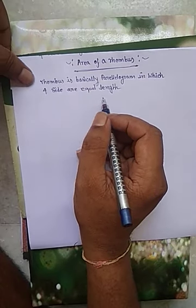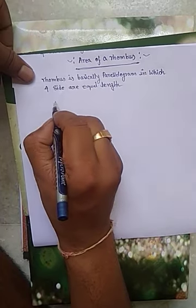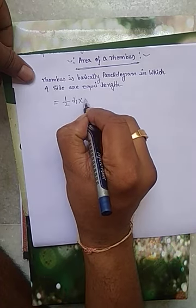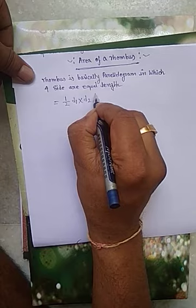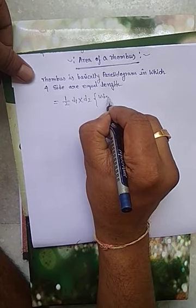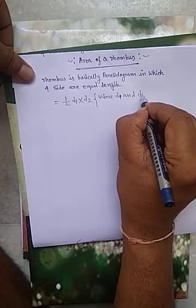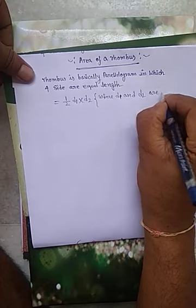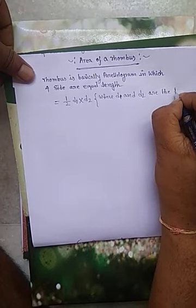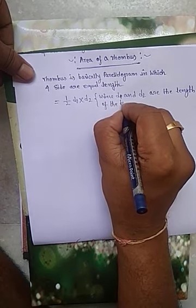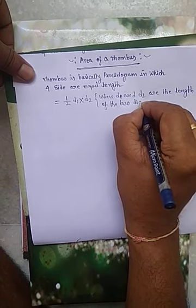So, basically area of the rhombus is equal to half D1 into D2, where D1 and D2 are the length of the two diagonals.